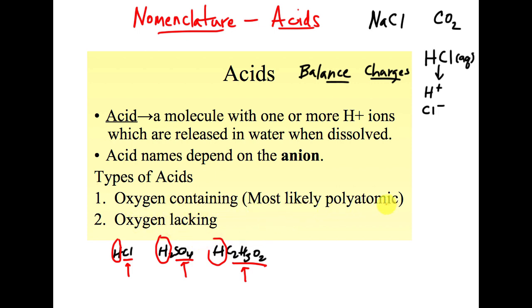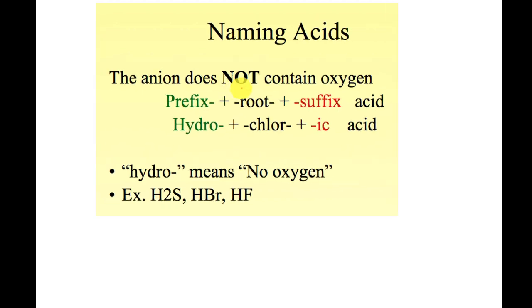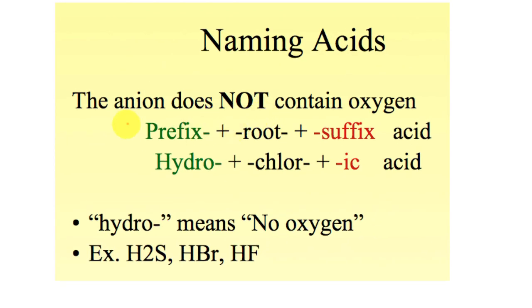Here's the rules for naming acids that do not contain oxygen. If there's no oxygen, this is the pattern you're going to follow: you're going to put a prefix in the front, there's going to be a root from the anion name, and you're going to add a suffix, and then you throw the word acid at the end. Hydro is the prefix that we use—like hydrochloric acid, which would be HCl. Prefix is hydro. What does hydro mean? It tells us there's no oxygen.